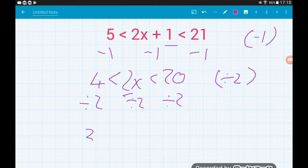So 4 divided by 2 is 2. 2x divided by 2 is a single x. And then 20 divided by 2 is 10. So our solved inequality is x is greater than 2 but less than 10.